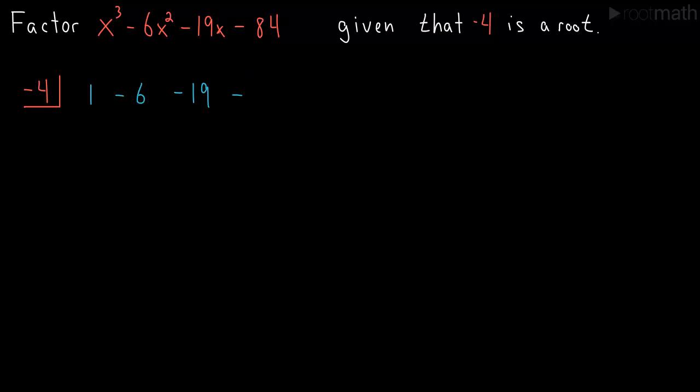This should be a positive 84, sorry, positive 84. And we draw a little line, and first step we always drop down this one or whatever that number happens to be.